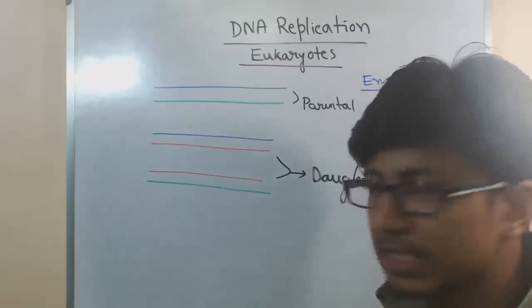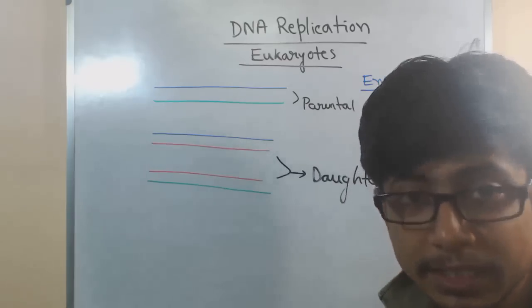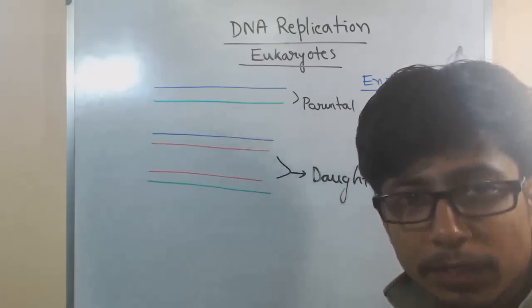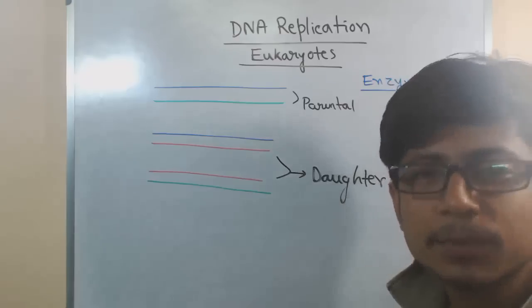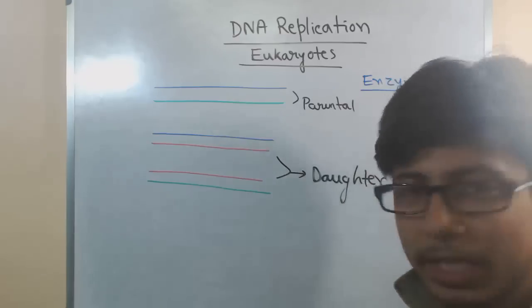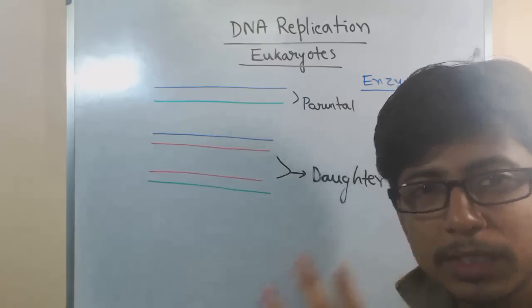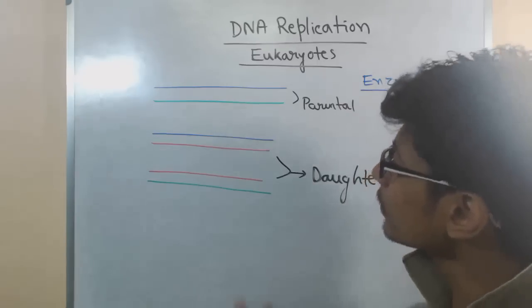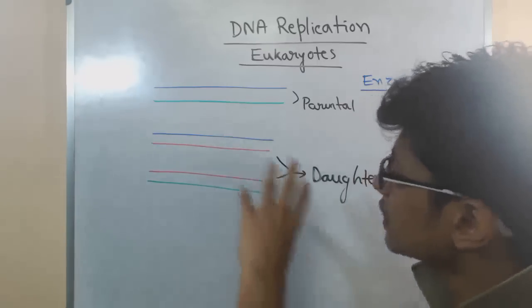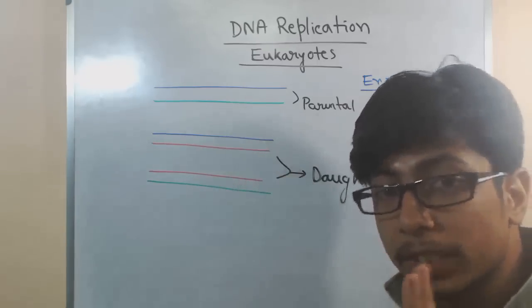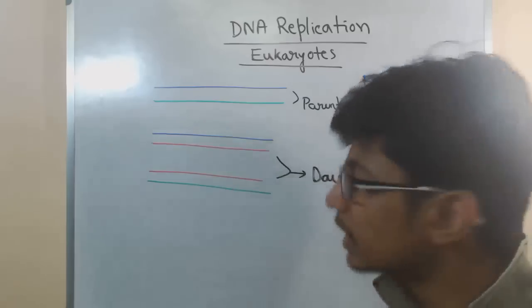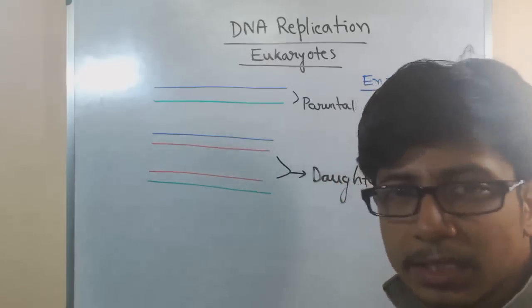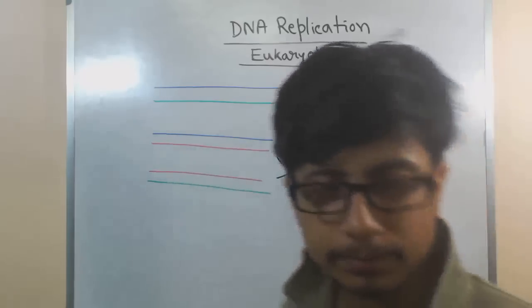At least three different proteins are needed: CDT, CDC45, and MCM — all these proteins work together. Once the separation is done, the second stage is priming.